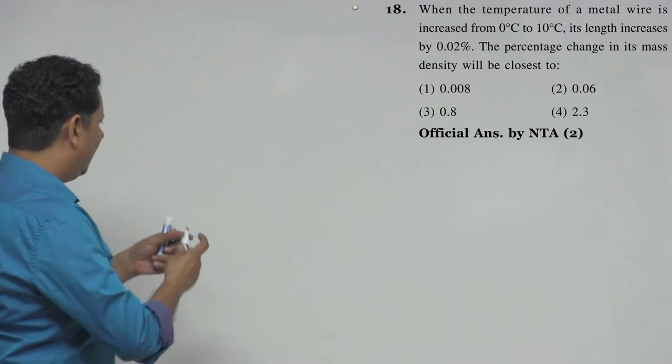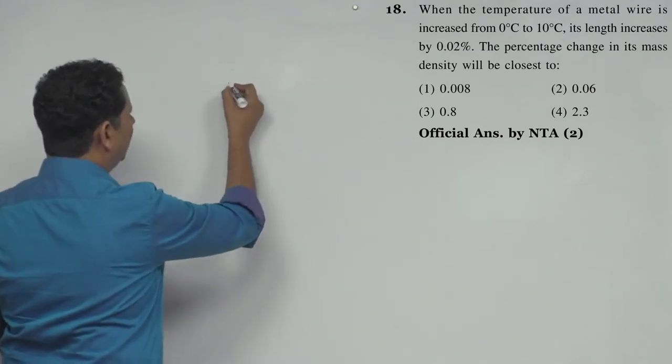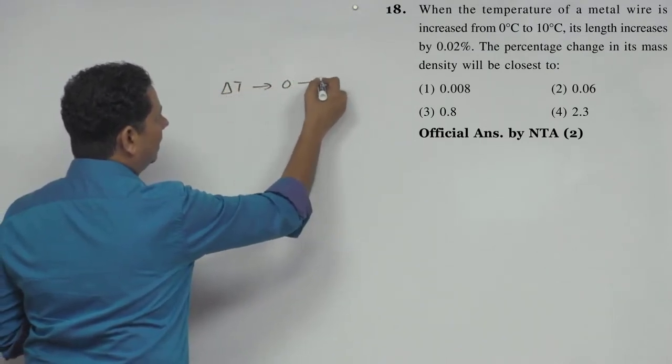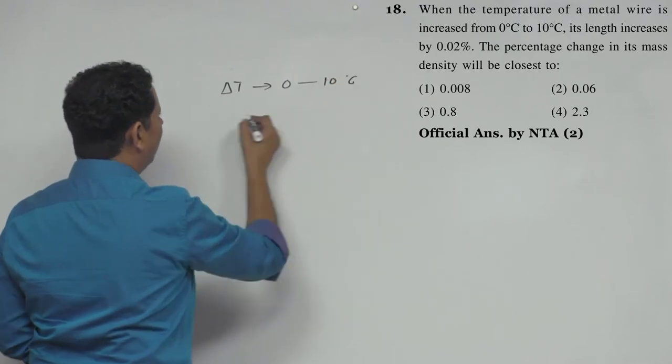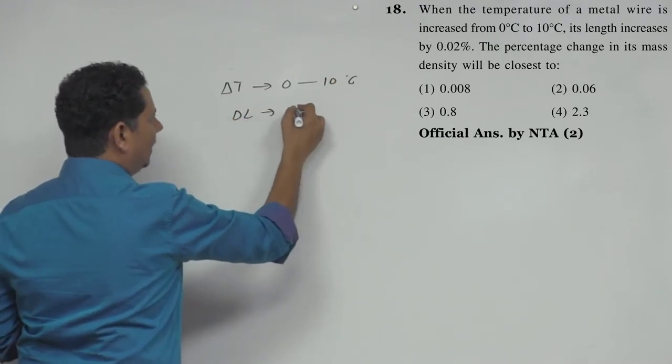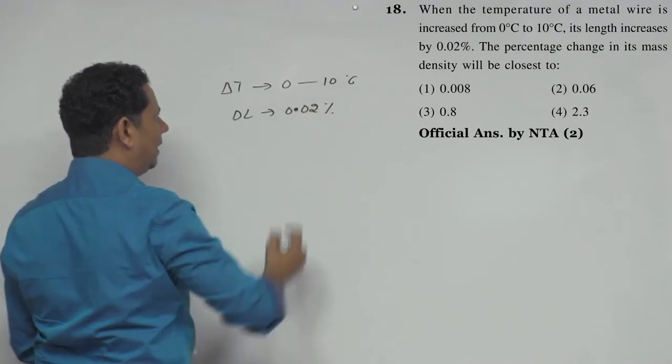So what we have given here is that when delta T, the temperature change, goes from 0 to 10 degrees centigrade, the change in delta L is 0.02%.